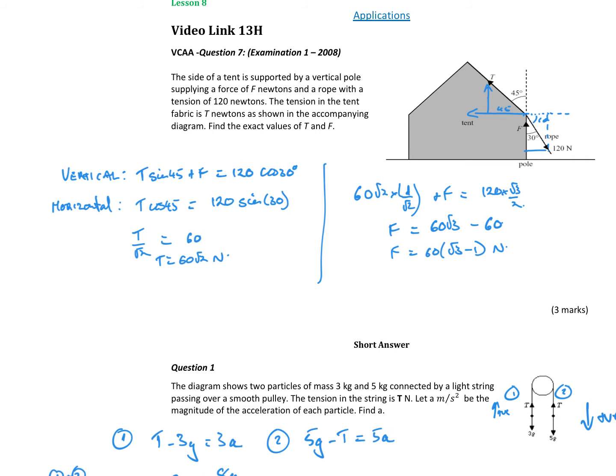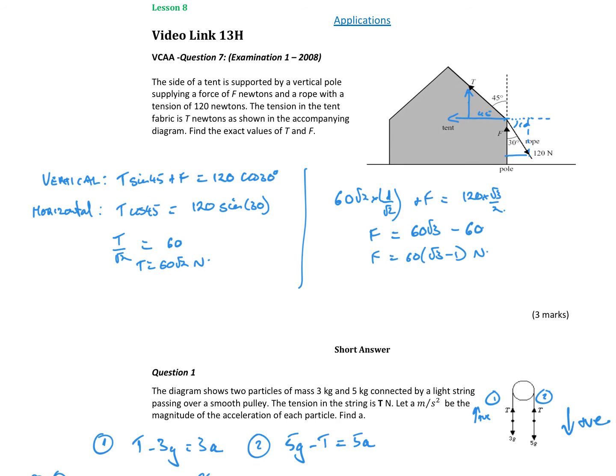Okay, so let's resolve our forces vertically and horizontally. We can see our tension force which is going to have a vertical component and a horizontal component. The angle is going to be 45 degrees. Similarly, I've got the rope which is going to have a horizontal component and a vertical component but acting down.